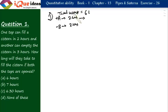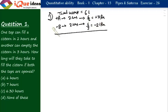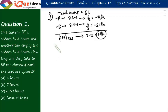From here we can calculate the speeds. A's speed would be 6 divided by 2, that is plus 3 liters per hour. B's speed would be 6 divided by 3, which is minus 2 liters per hour — plus sign to show it fills and minus sign to show it empties. A and B combined speed would be 3 minus 2, which is 1 liter per hour. Time taken together to fill would be the total capacity of 6 liters divided by 1 liter per hour, which is 6 hours.